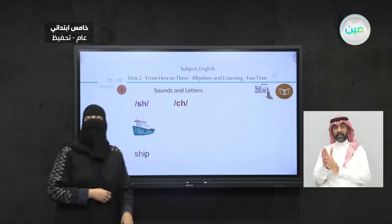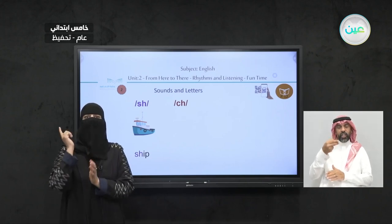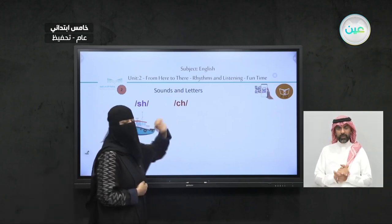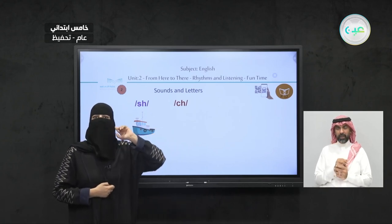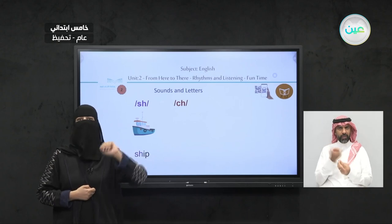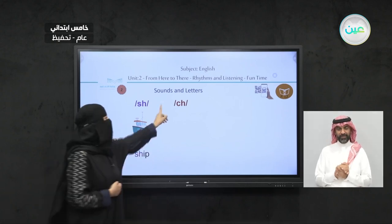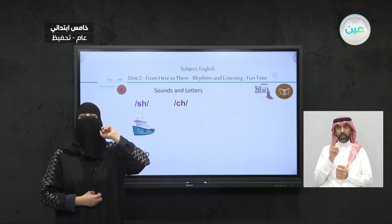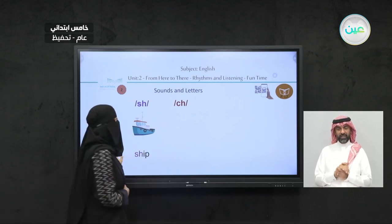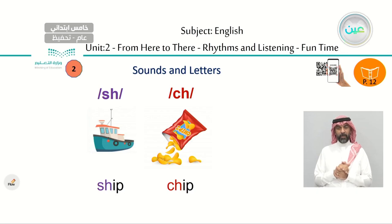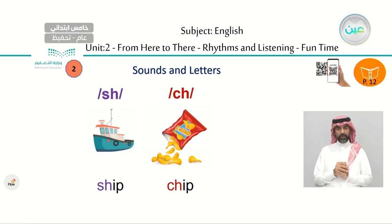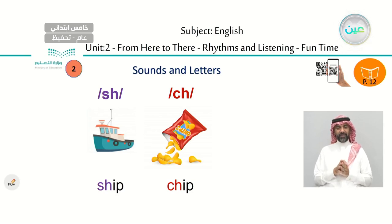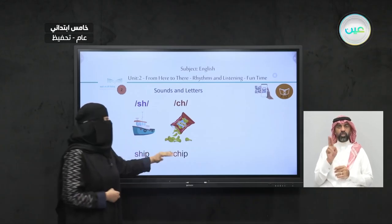Look at the next one. Here we have also a digraph — C and H. C and H together says ch, ch. You remember that, right? C-H says ch, ch. As in chip, chip. Here we have one piece of chip. Do you like chips? Me too! So C-H says ch, ch — chip, chip.